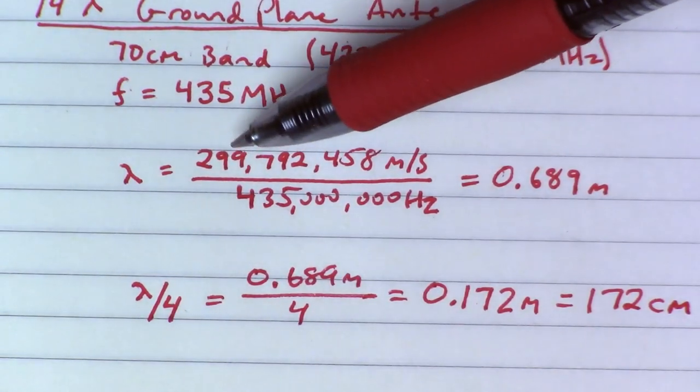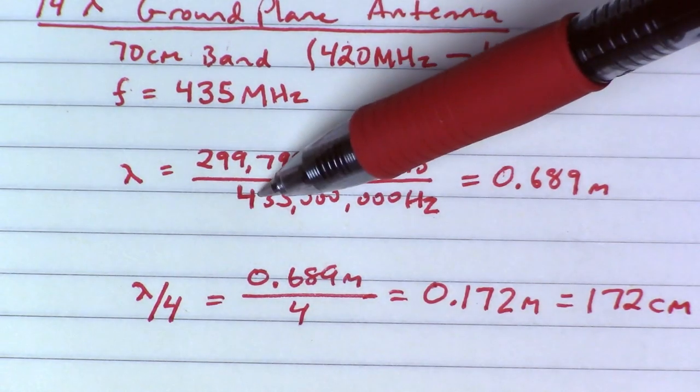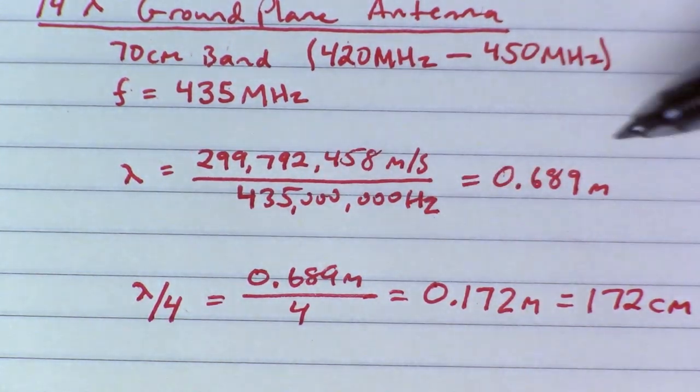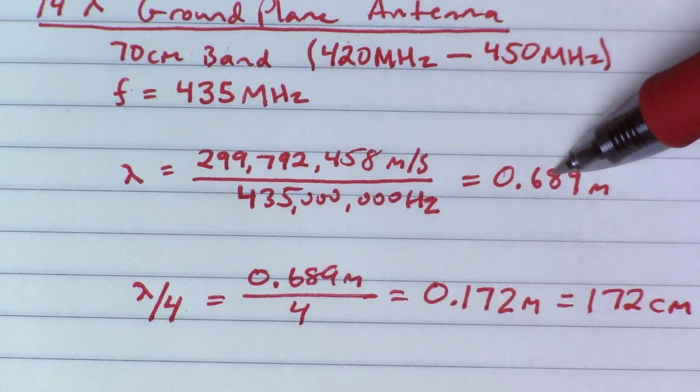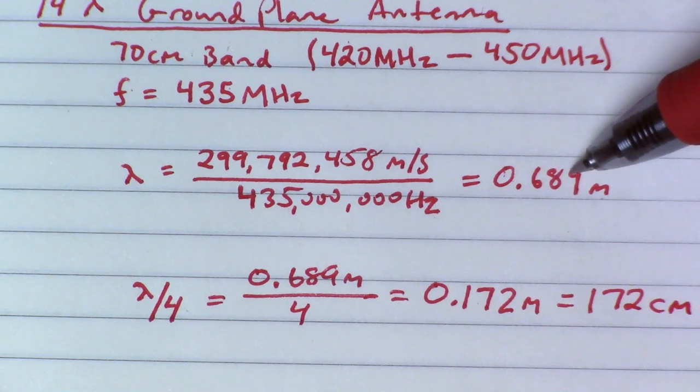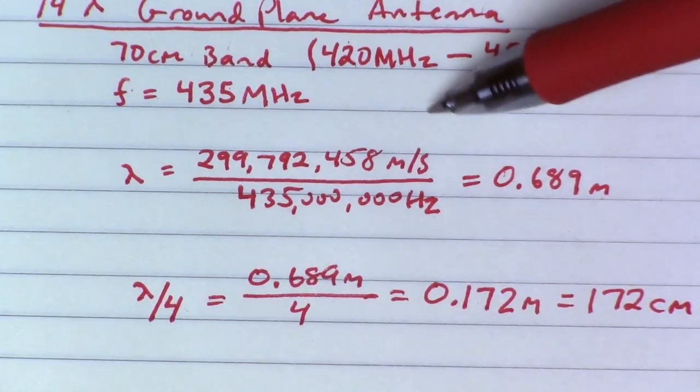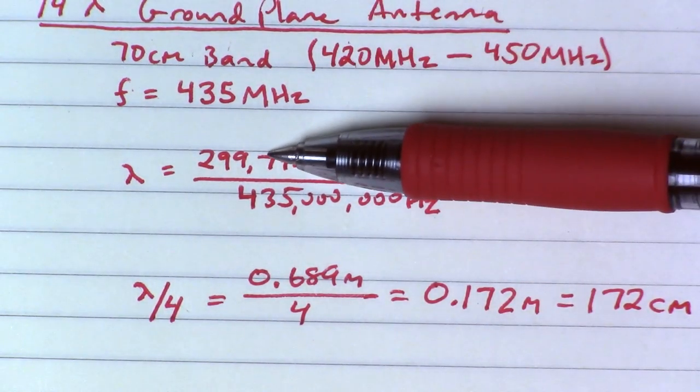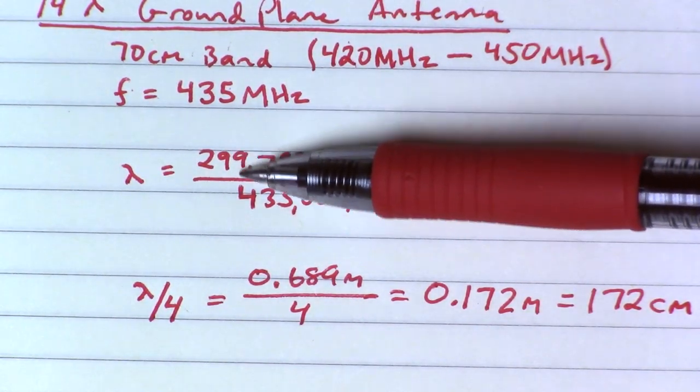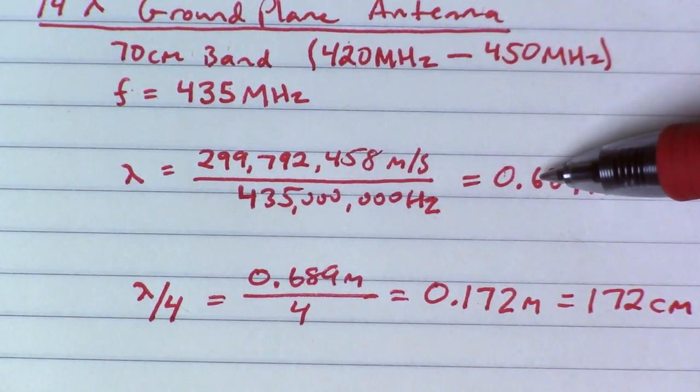So that means if we take the speed of light, which is 299 meters per second divided by our frequency in Hertz, that gives us 0.689 meters. Now you can see why they call it the 70 centimeter band.